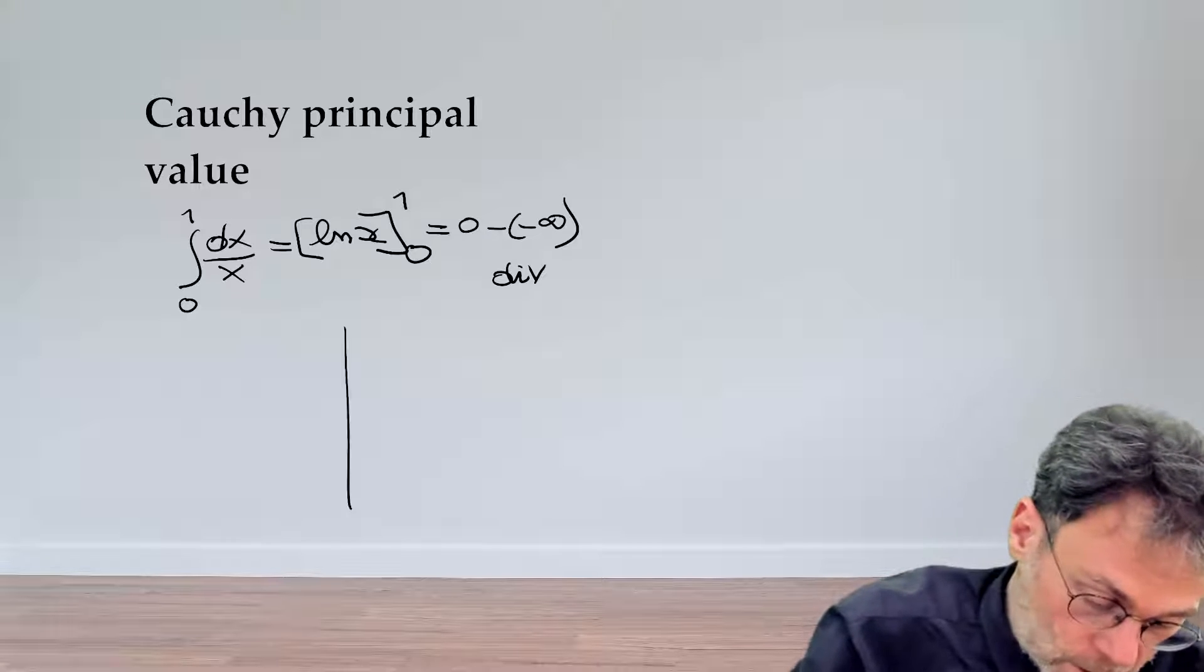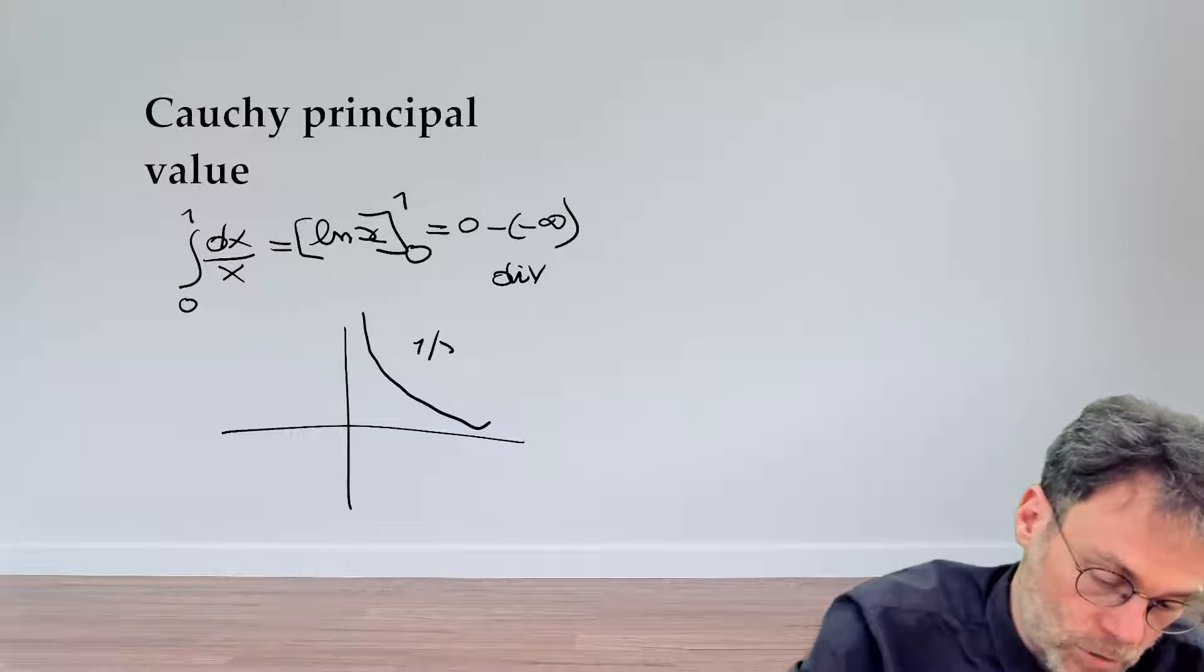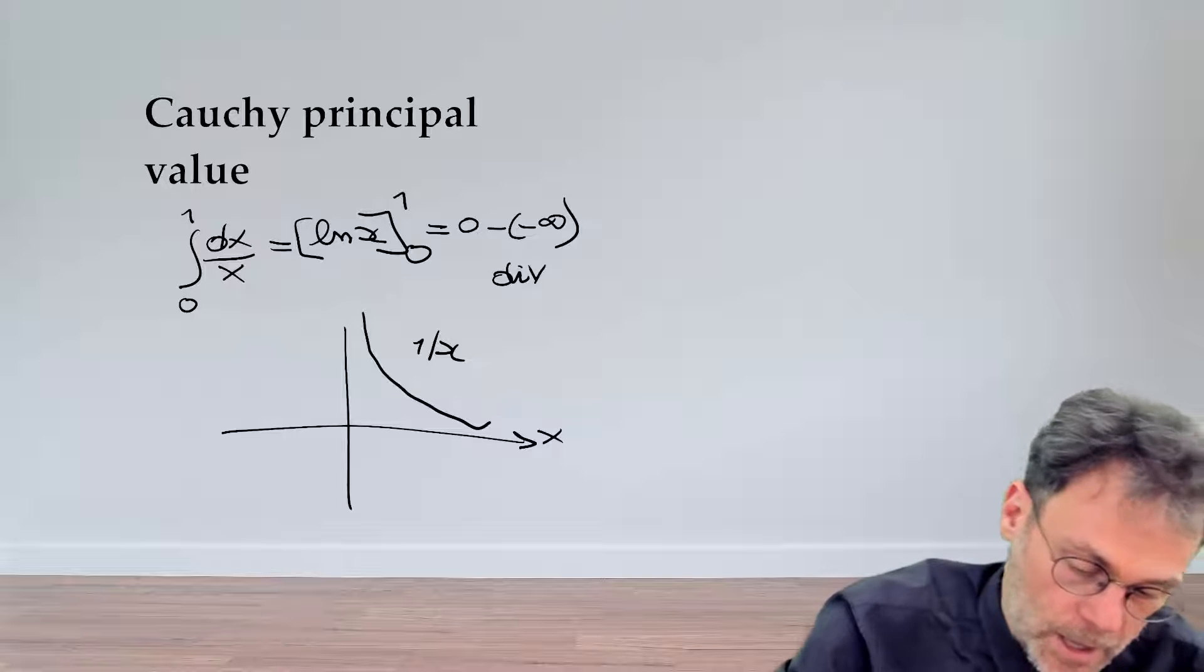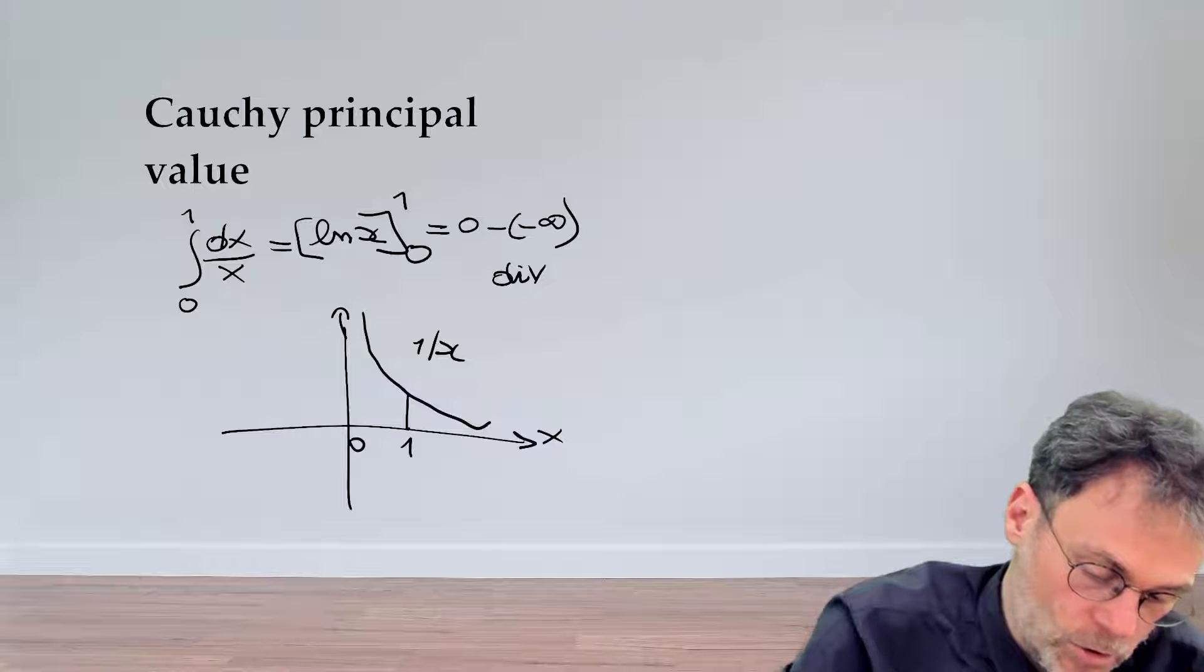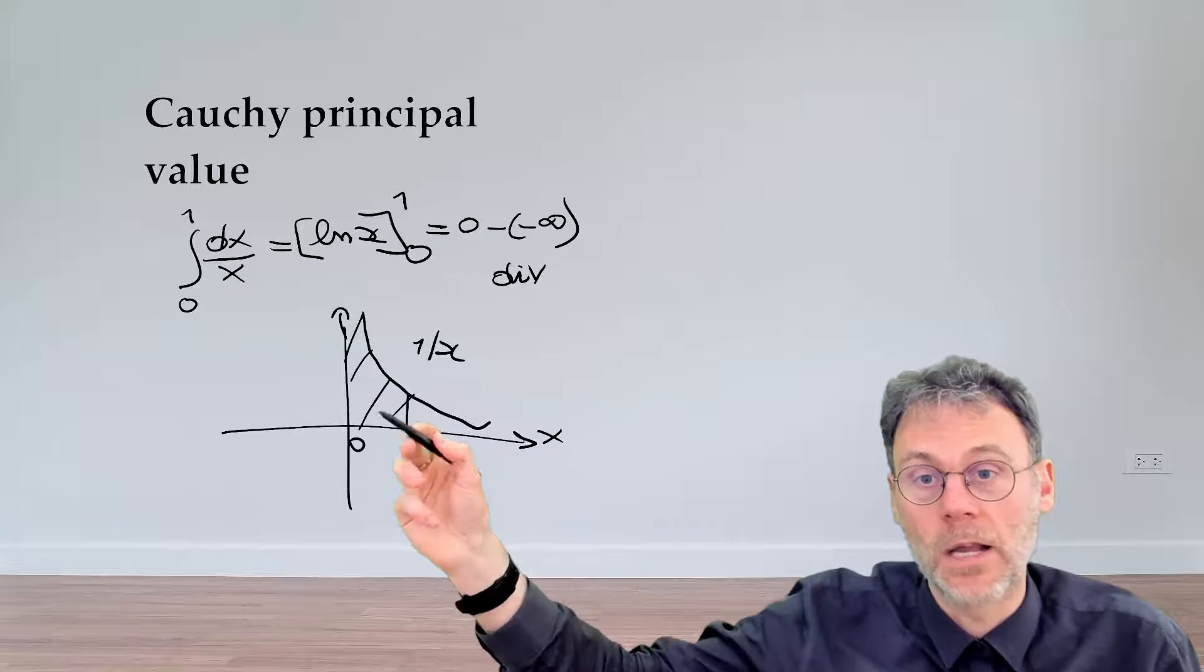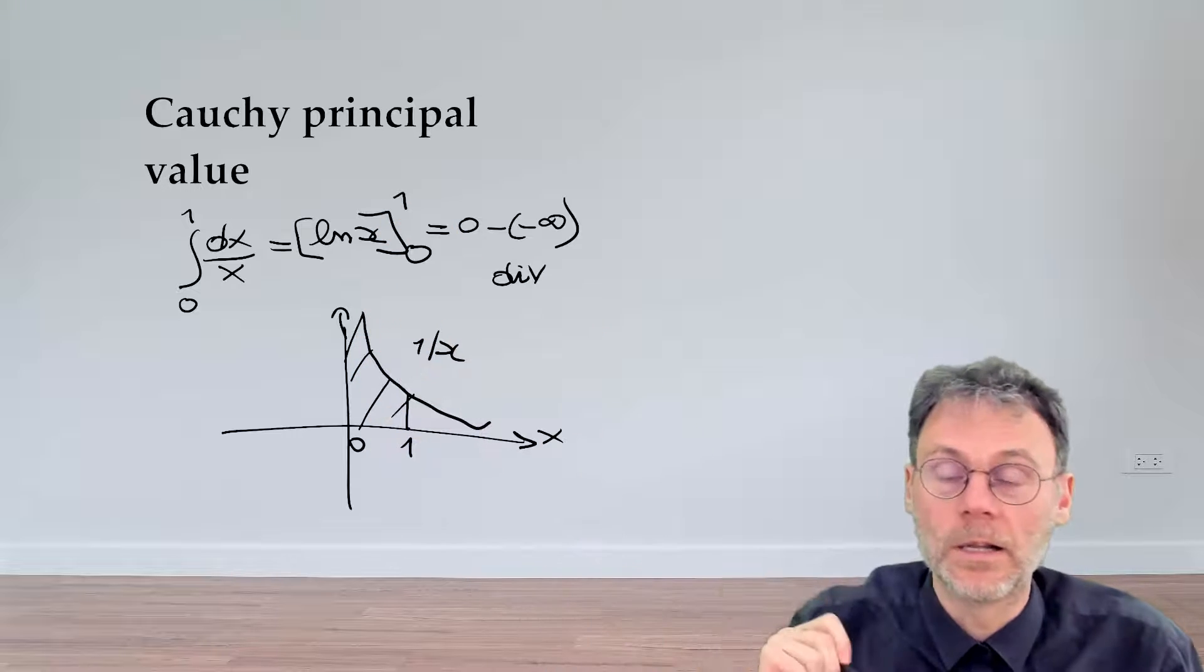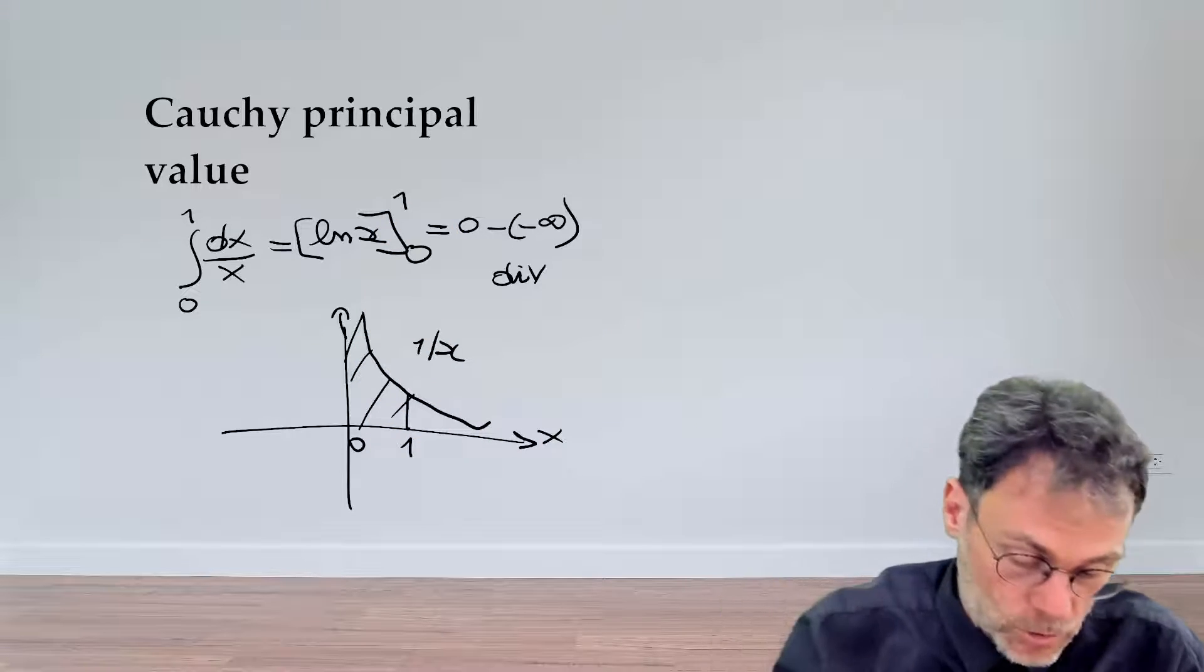Obviously, if we look at the plot of the function 1 over x and then we look at the area under the curve from 0 to 1, that means that this area here will blow up, it's an infinite area. Nothing surprising at all.